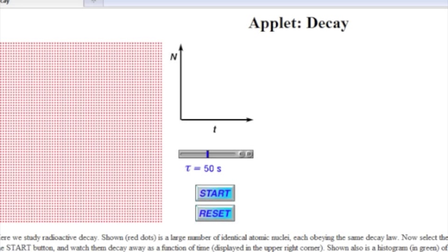This is a little animation showing what we mean by half-life, or rate of radioactive decay. Here, the red dots show a large number of identical atomic nuclei that all obey the same decay law.